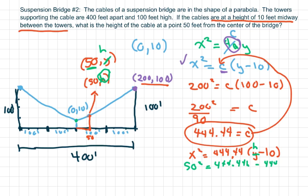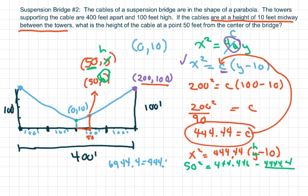Now I'm going to add 444.4 to both sides and get 6,944.4 equals 444.44 times H. Dividing both sides by 444.44, you get H equals 15.625 feet. So basically, the height of this cable is 15.625 feet. Thank you and have a nice day.